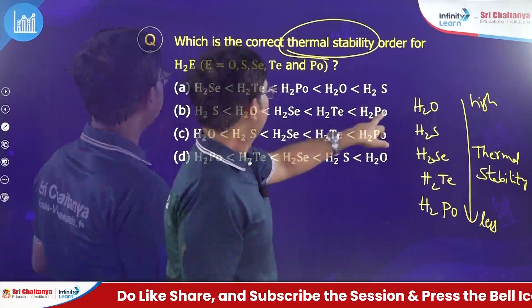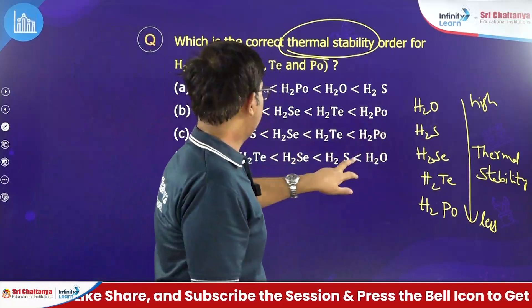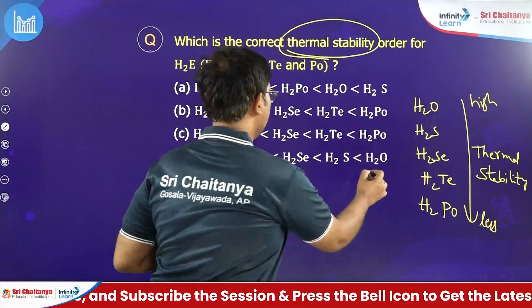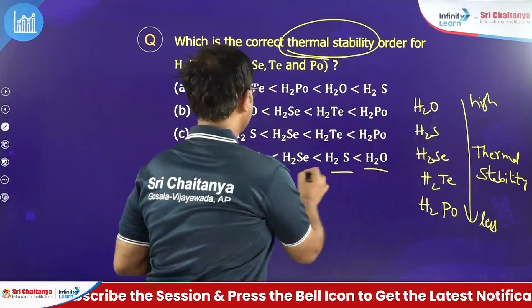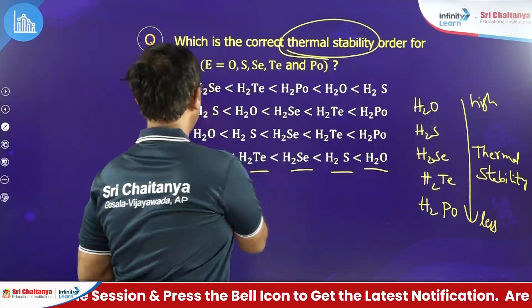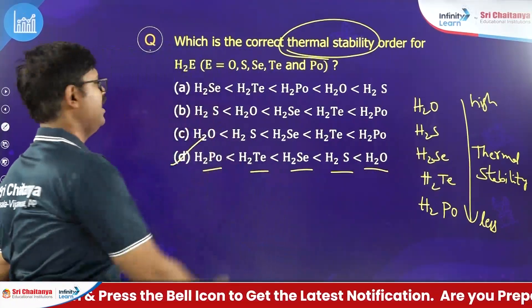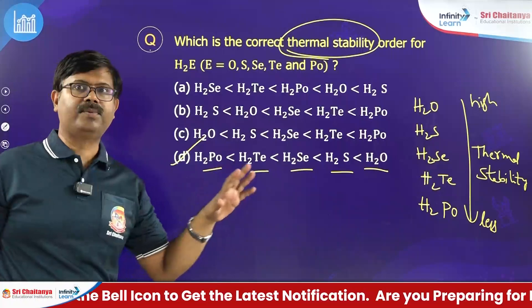Looking at the options, the correct thermal stability order is H2O > H2S > H2Se > H2Te > H2Po. This is the right option.